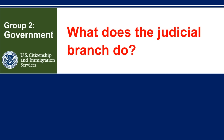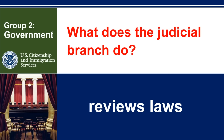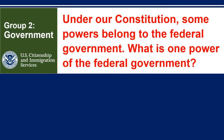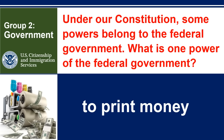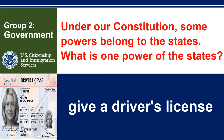What does the judicial branch do? Reviews laws. Under our Constitution, some powers belong to the federal government. What is one power of the federal government? To print money. Under our Constitution, some powers belong to the states. What is one power of the states? Give a driver's license.